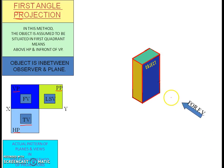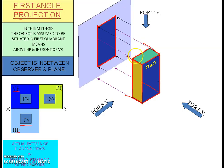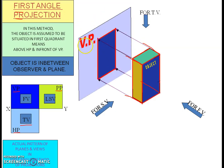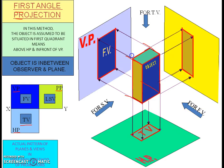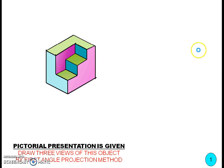For getting the front view, the observer looks from the front of the object and projects these four points to the VP to get the front view. Likewise, we project four points to the HP for getting the top view, and another four points to get the side view on the VP.